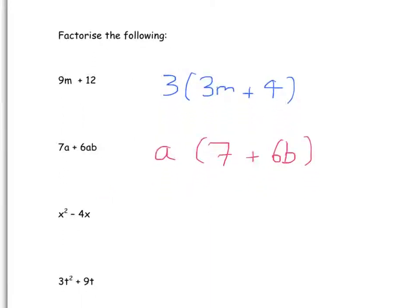Likewise, in this question: x squared minus 4x. Is there a value that's common to both parts? Well, there isn't. But is there a common letter? Yes — x is common to both parts. So we can take x out. What do we times x by to get to x squared? Well, that's x. And what do we times x by to get to minus 4x? That's minus 4.